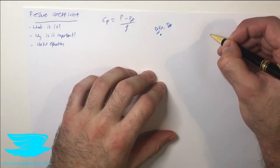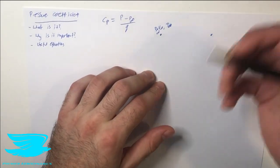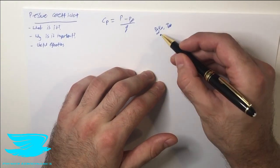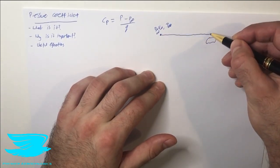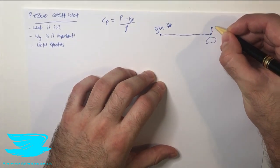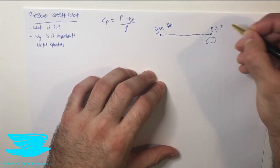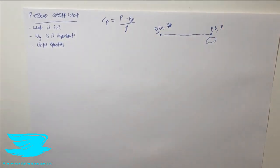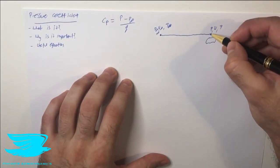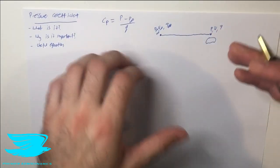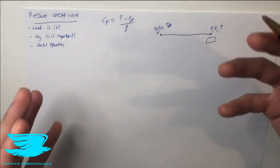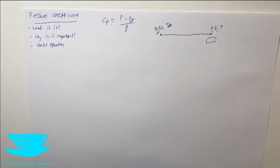Now let's say we have another point downstream, and this point is in the vicinity of an object. So we have some sort of object here and a streamline going through, and we have the pressure, velocity, and density at that point. The first p is the pressure at this second point, and p infinity is the pressure in the free stream flow.